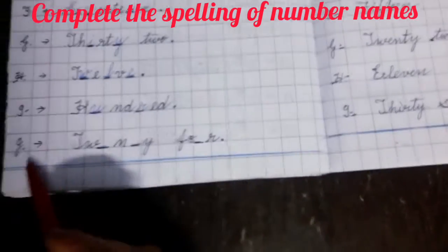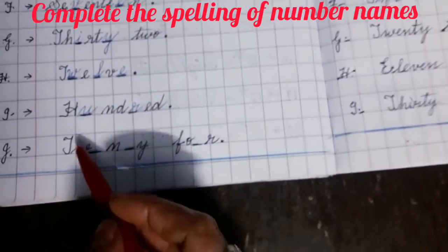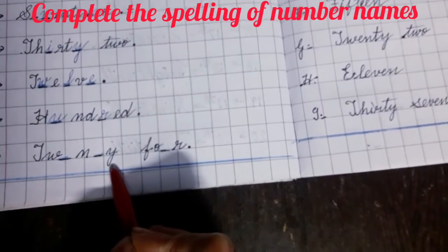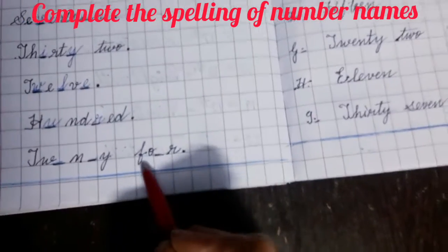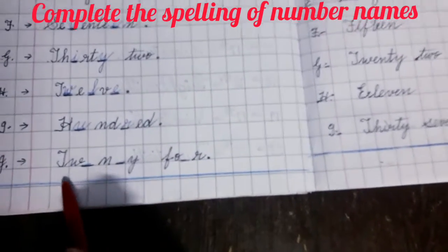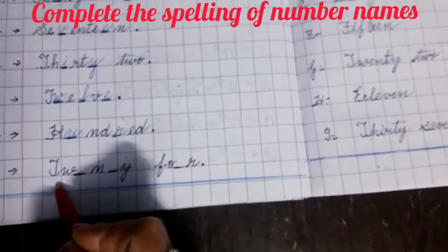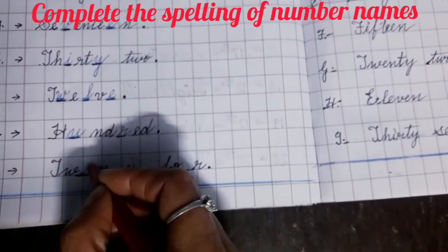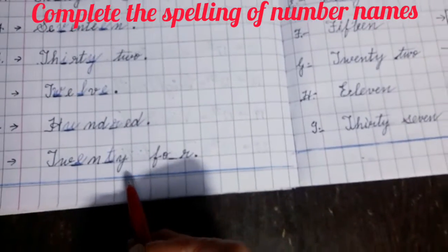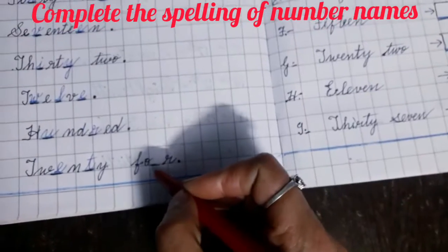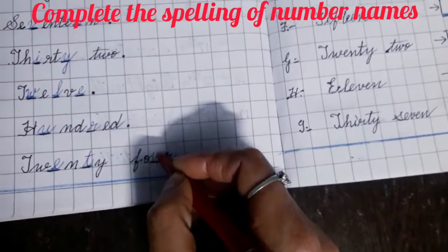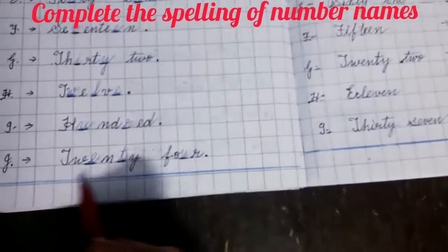Now leave this row and write J, put an arrow. Write T W blank space N blank space Y — leave a block — then write F O blank space R. This is the spelling of 24. T W is already written, what you will fill? E. N is written, what you will fill? T — TWENTY — spelling of 20. The next spelling is of 4 — FOUR. F O is already written, you will fill in U. R is written — F O U R — 4. 24 — TWENTY FOUR.